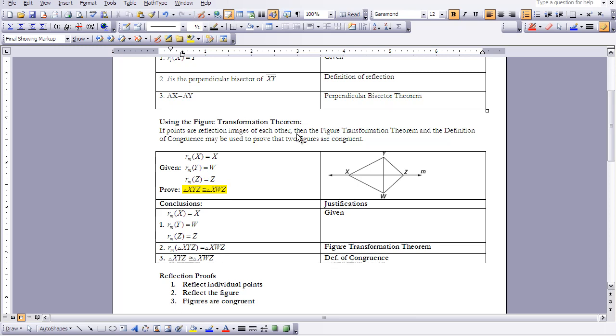We were given that individual points were reflected. X was reflected and ended up at X because it was on the line. We reflected Y and it ended up at W. We reflected Z and got Z.